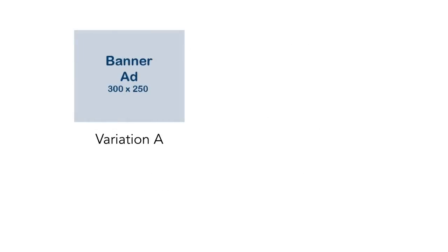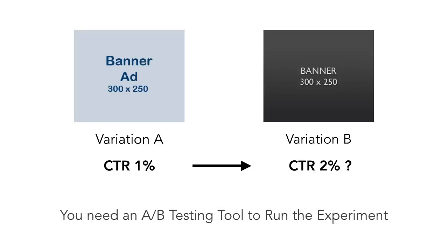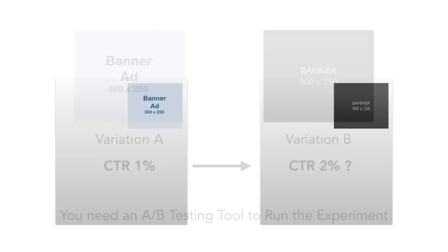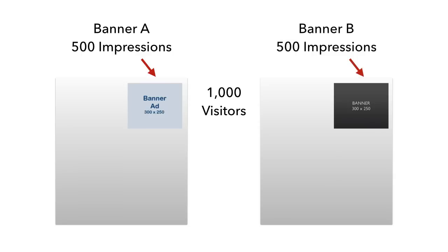Let's say a web banner gets a CTR of 1%. If you want to improve the CTR to 2%, you need a better banner. But how can you find out if a new banner performs better? You have to use an A-B testing tool which will automatically rotate the two variations of the banner on your web page. If your web page gets 1,000 visitors, the A-B testing tool will display banner A for 500 times and banner B for 500 times.